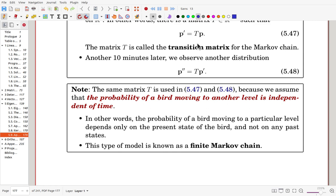The same matrix T is used in these two equations. Because we assume that the probability of a bird moving to another level is time independent. In other words, the probability of a bird moving to a particular level depending only on the present state of the bird. This type of model is known as Markov chain.